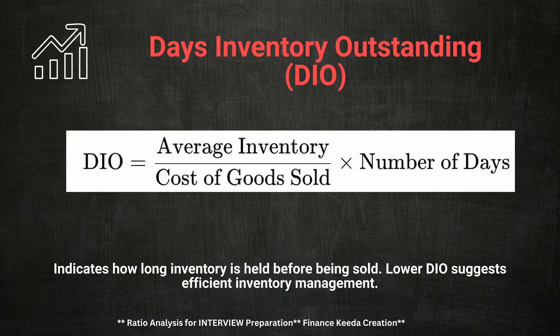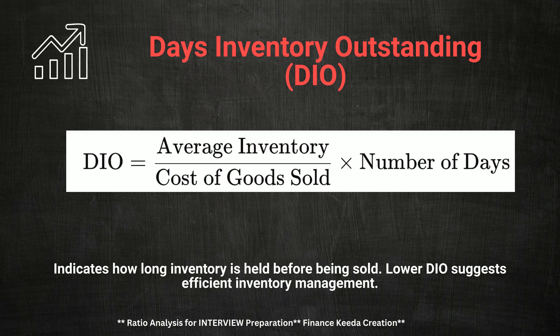Next up is Days Inventory Outstanding, or DIO. This ratio tells us how long it takes for a company to sell its inventory. The calculation is: DIO equals average inventory divided by cost of goods sold, multiplied by 365. An interview question you might face is: how can a high DIO affect a company's operations? A high DIO could indicate overstocking or slow-moving inventory, which can tie up capital and increase holding costs. A low DIO suggests efficient inventory management, enabling the company to convert inventory into sales swiftly.